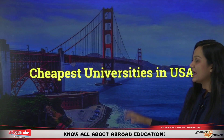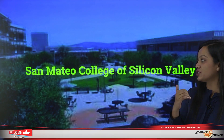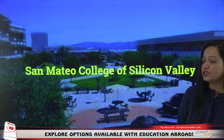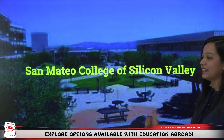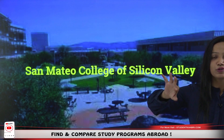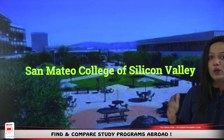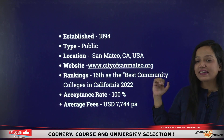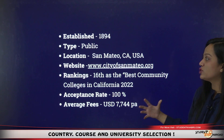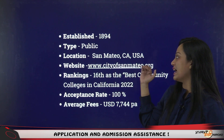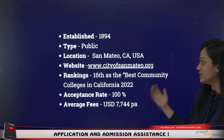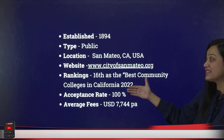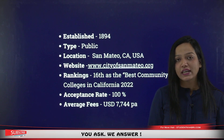The first college on the list is San Mateo College of Silicon Valley. When you hear Silicon Valley, you think of many corporates and startups. This college was established in 1894. It's a public college located in San Mateo, USA, and it ranks 16th among the best community colleges in California.